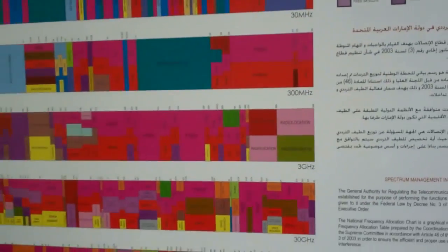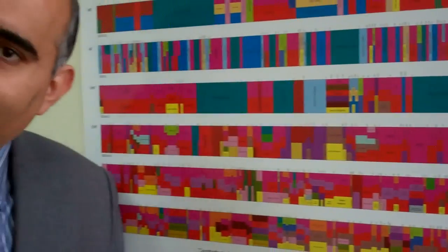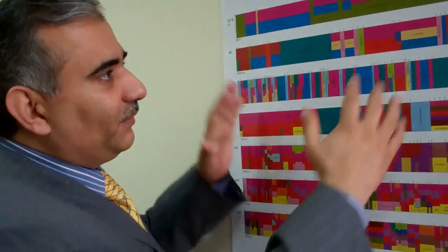This is how the cell phone frequencies are used by the operators to offer us the very advanced services like for example 3G and now the 4G. And that's how we can correlate.